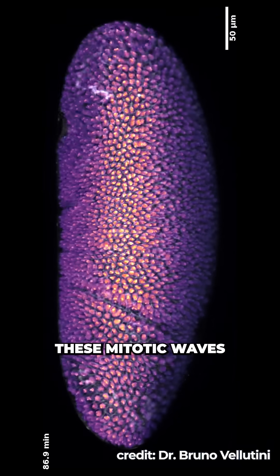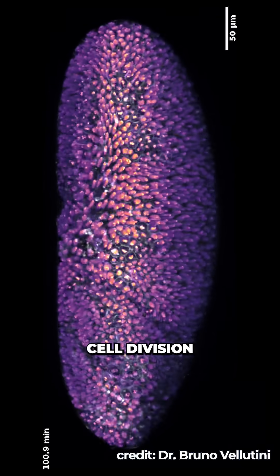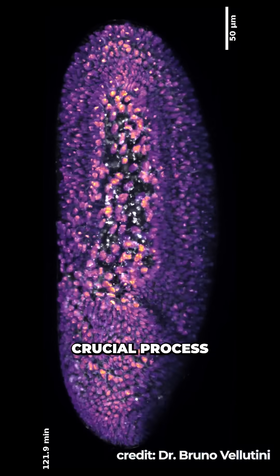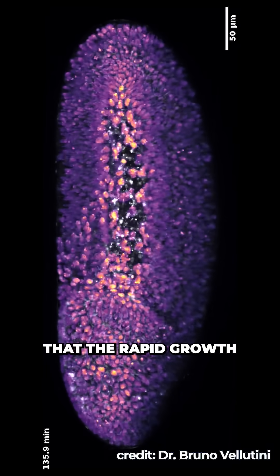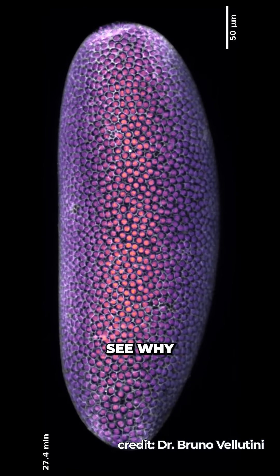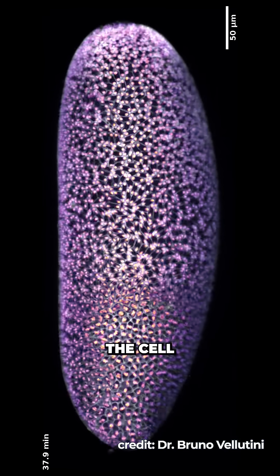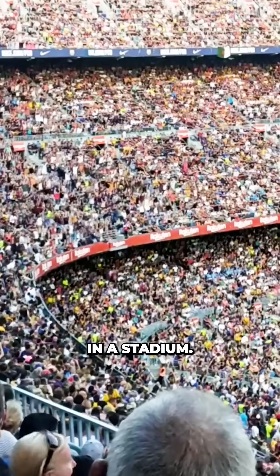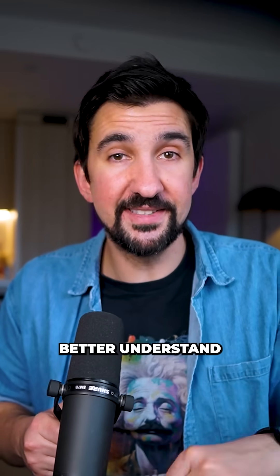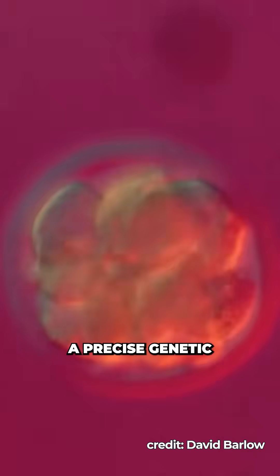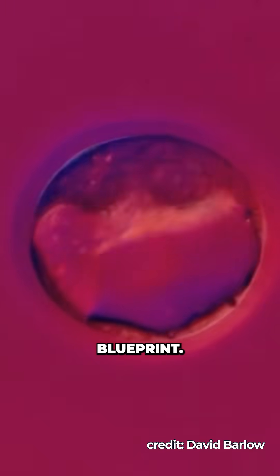These mitotic waves are a pattern of cell division that happen right after egg fertilization, and are a crucial process to ensure that the rapid growth of the egg stays organized. You can actually see why these are called waves — the cell division moves from one end to the other, just like a Mexican wave in a stadium. These processes help us to better understand how tissues and organs form correctly, as they follow a precise genetic and biochemical blueprint.